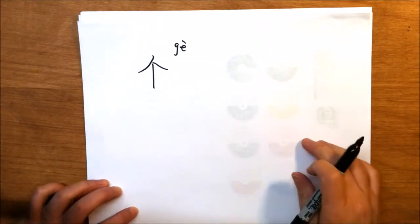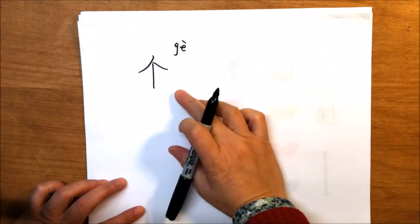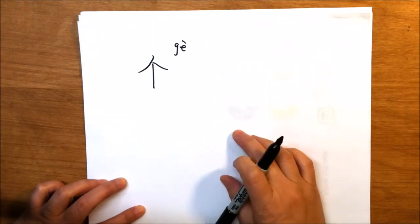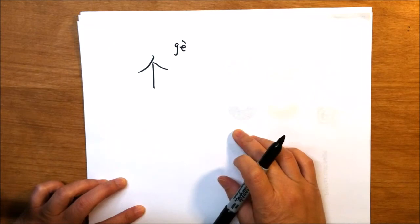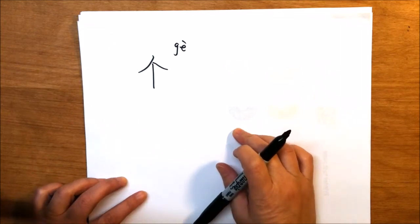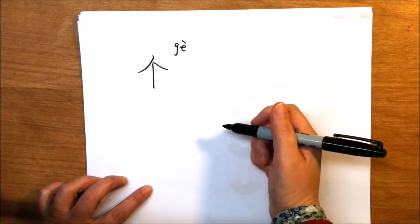Good morning, we're going to talk about this character Ge. Ge is a general measure word. It is used for nouns that don't require a specific measure word.